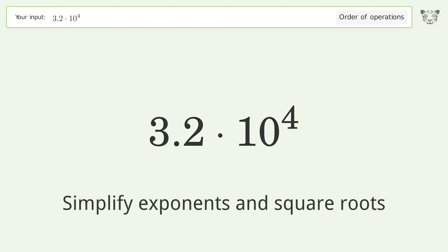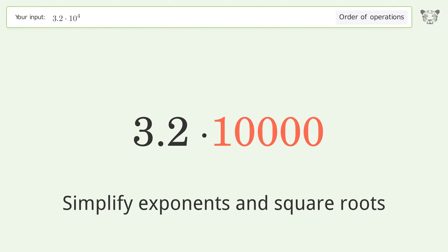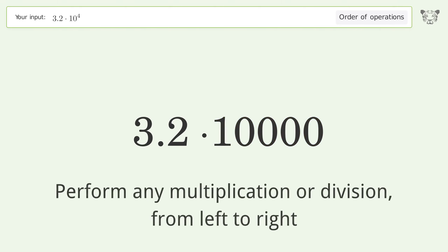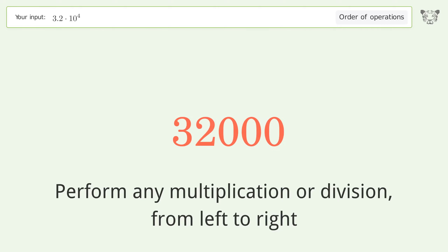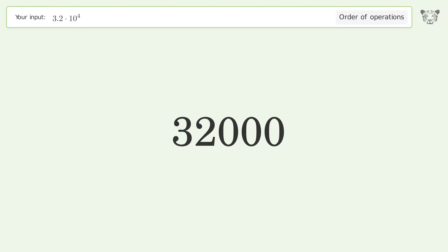First, simplify exponents and square roots: 10 to the power of 4 equals 10,000. Then perform any multiplication or division from left to right: 3.2 times 10,000 equals 32,000. And so the final result is 32,000.